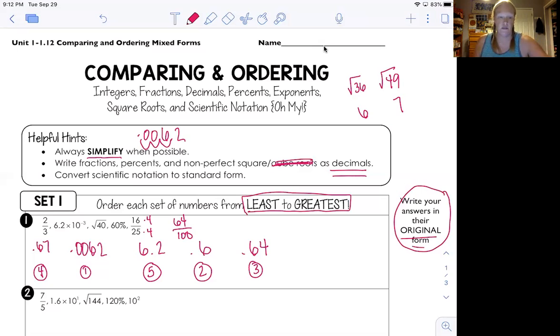Now I'm going to rewrite them in their original form. So 0.0062 was originally 6.2 times 10 to the negative third. The next number was number two, which was 60%. So I'm going to write 60%. The third number was the fraction. So I'm going to put 16 over 25. The next one we said, number four was 0.67, which is two thirds, the other fraction. And then the last one was the one we estimated, which was the square root of 40. Okay. So my final answer is this. Okay. They're all in their original form. Alright. Hopefully you feel pretty good about that. Okay, cool. So let's try another one.